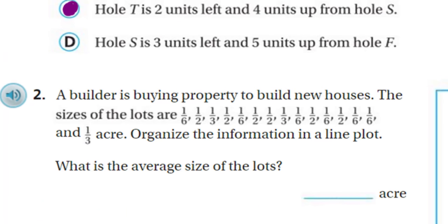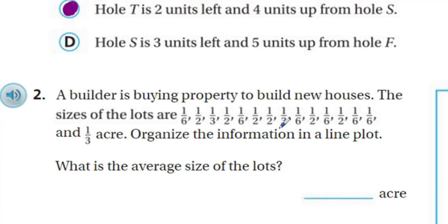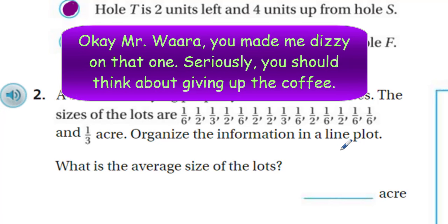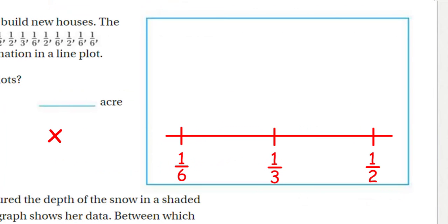Problem two: a builder is buying property to build new houses. The sizes of the lots are one-sixth, one-half, one-third, one-half, one-sixth, one-half, one-third, one-sixth, one-half, one-sixth, one-sixth, one-half, one-sixth, one-half, one-sixth, one-sixth — and one-third acre. Organize the information in a line plot. What is the average size of the lots?